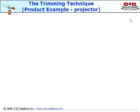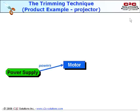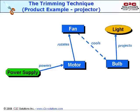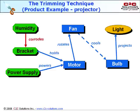In trimming, we often use function modeling techniques to better understand the situation and prepare for trimming. Here is a function model we created earlier for a cooling system in a projector. The power supply powers the motor. The motor rotates the fan. The fan cools the bulb. The bulb projects light. We have a bracket that holds the motor, humidity that corrodes the bracket, and a motor that vibrates the bulb.